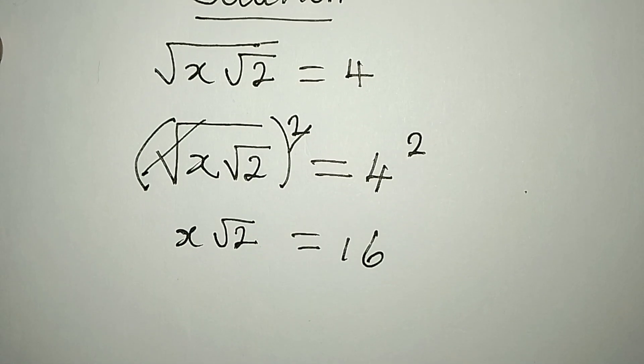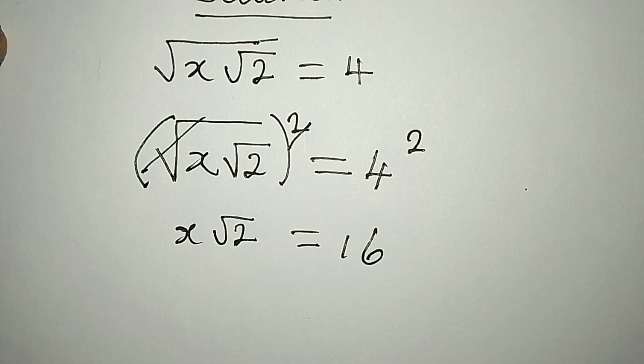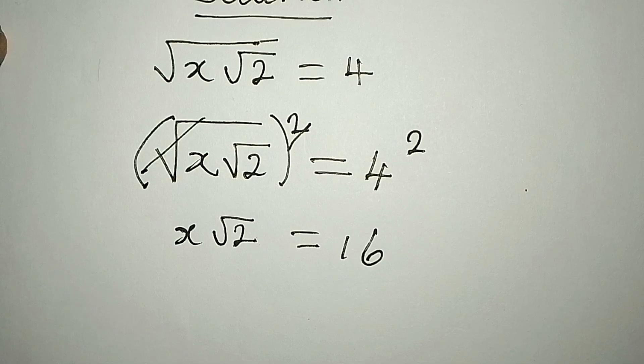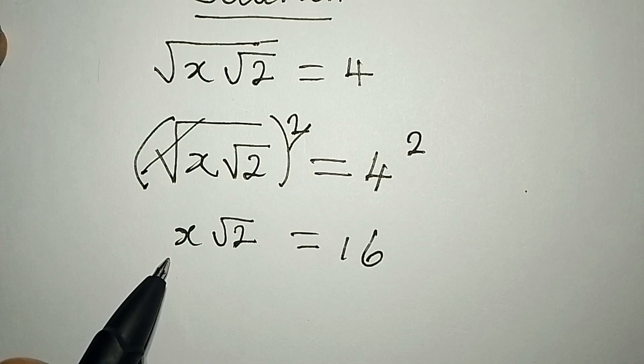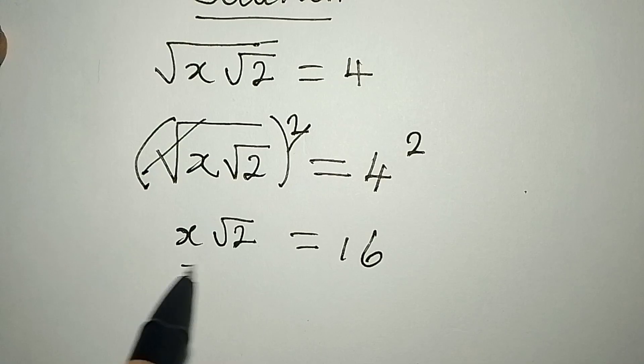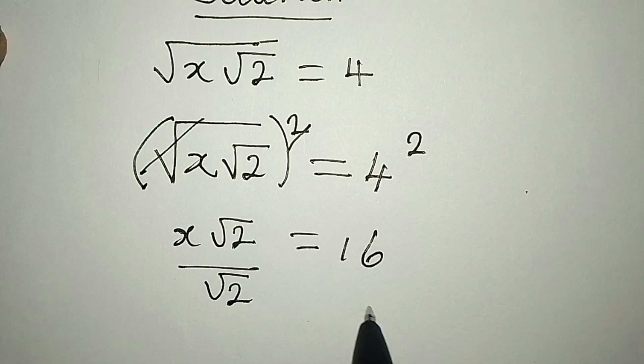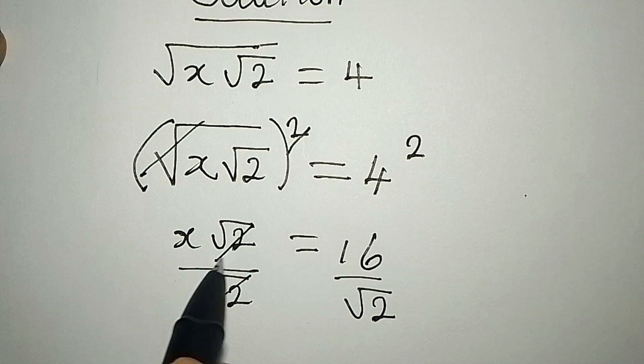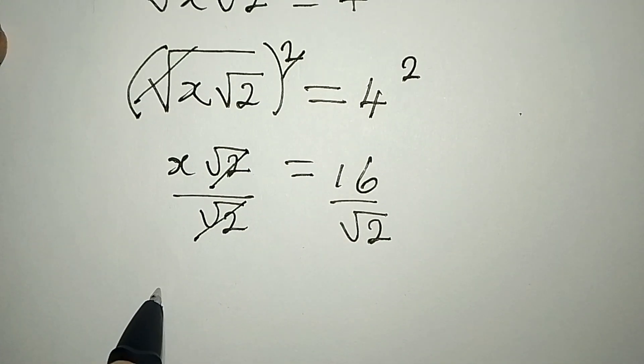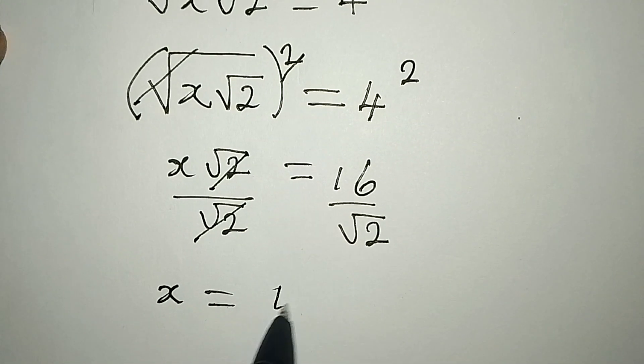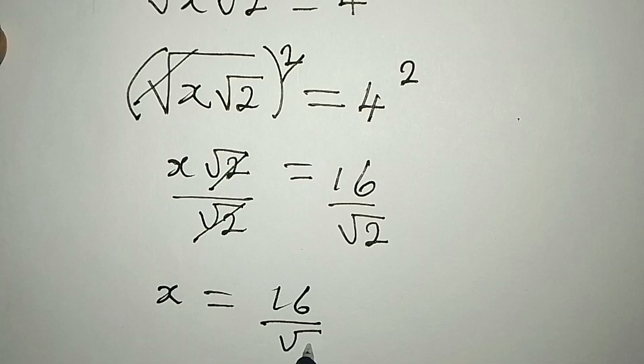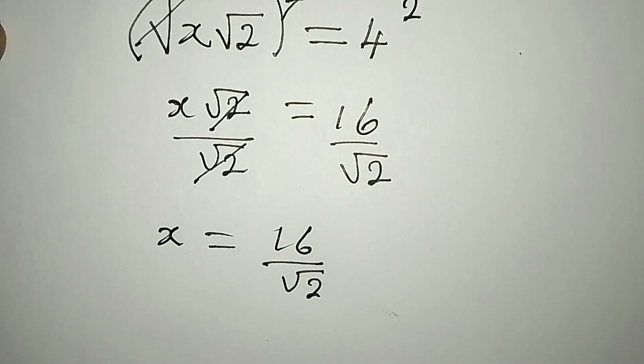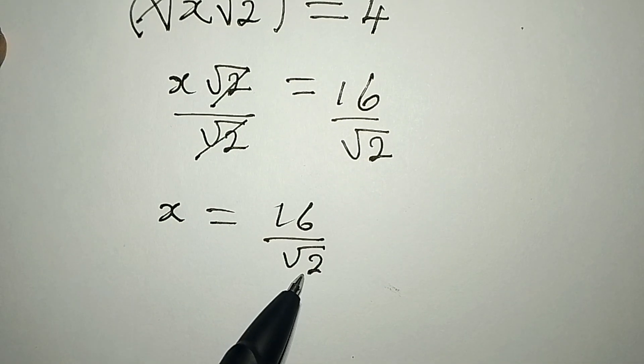I remember that we are looking for the value of x, right? So from here I can divide both sides by root 2, and divide this by root 2. This is going to go with this, and now we have x to be equal to 16 over root 2.